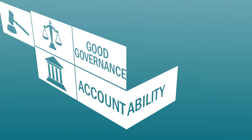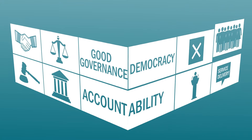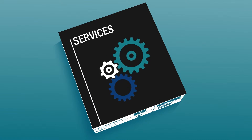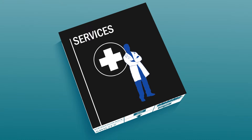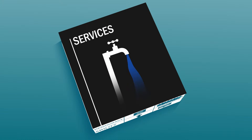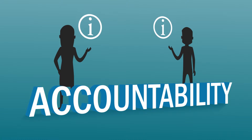Accountability is the cornerstone of good governance and democracy. It ensures that people get the services they need, be they good schools, well-managed hospitals, or clean water. But for accountability to happen, people need access to information.